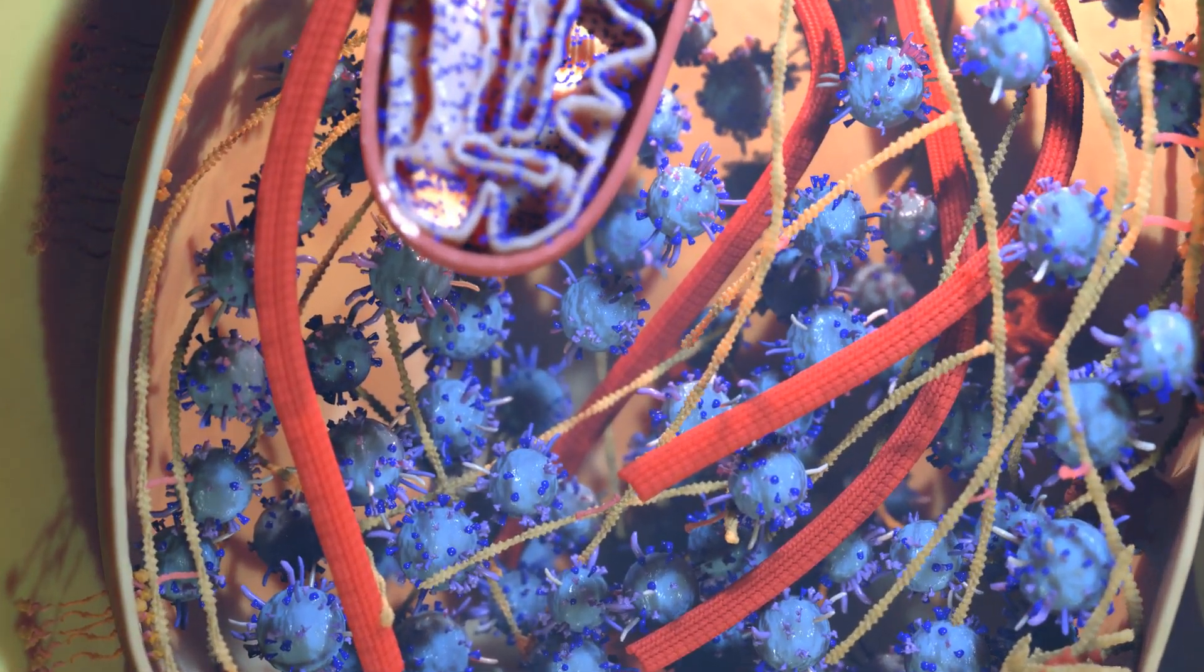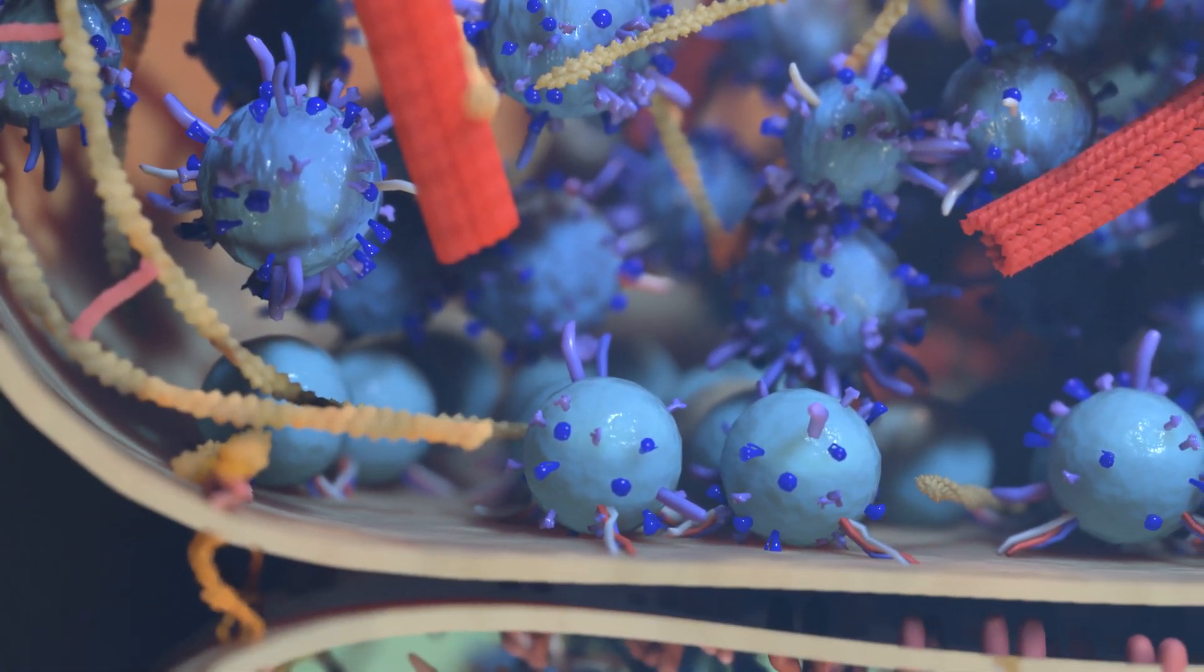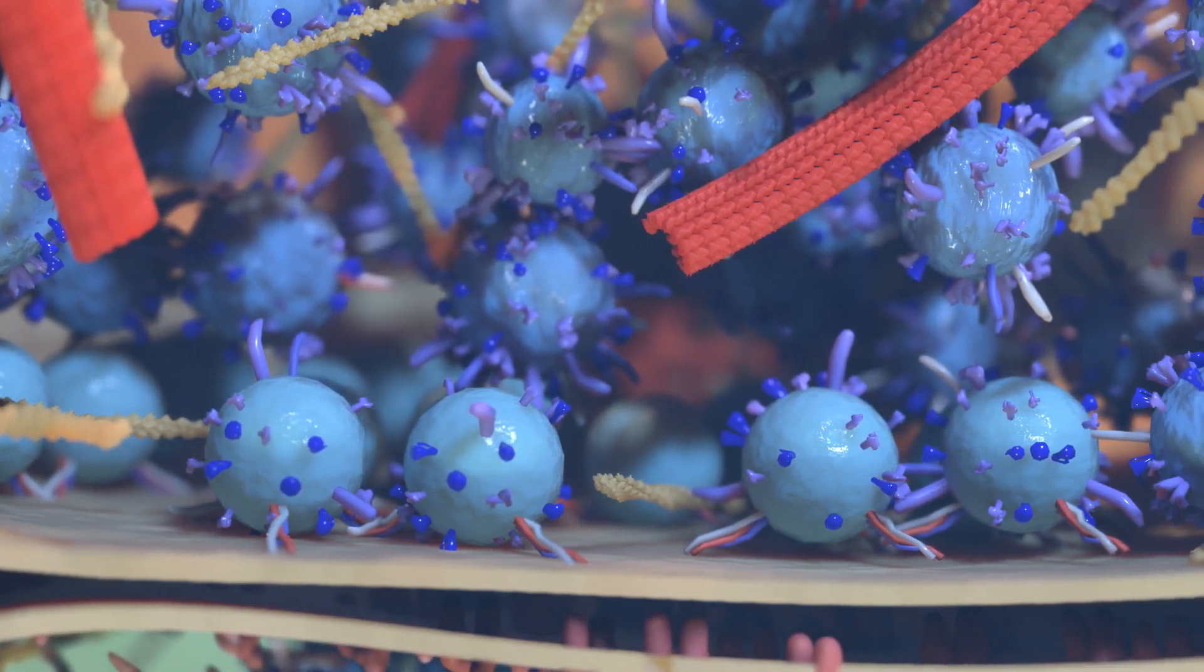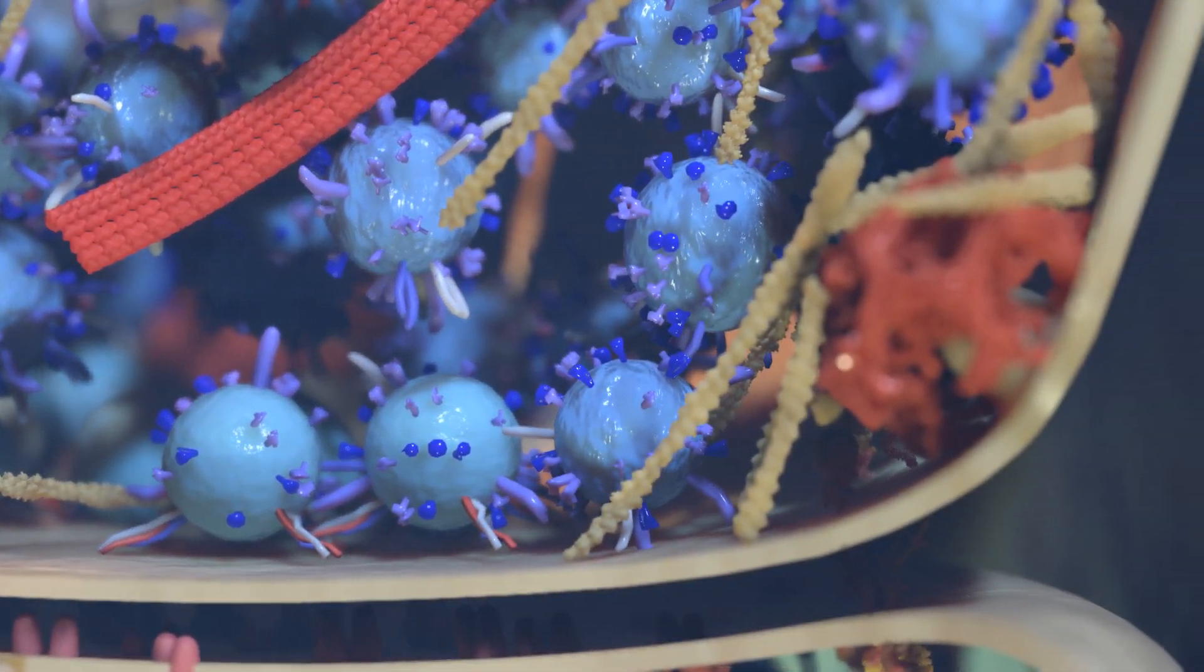Let's delve into the presynaptic terminal. The blue spheres are vesicles, tiny packages containing neurotransmitters. Some vesicles are docked at the membrane, ready to release their contents.